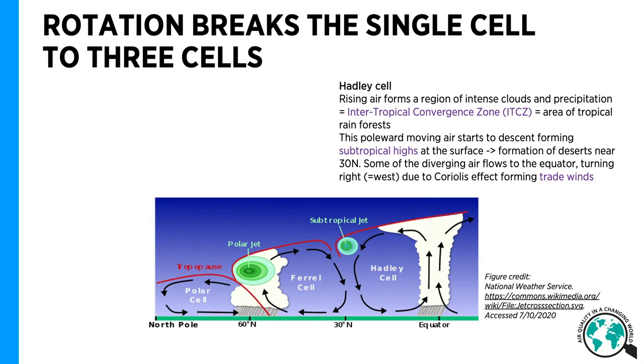In reality, the rotation breaks the single cell to three cells. Rising air at the equator forms intense clouds and precipitation, the so-called intertropical convergence zone. This intertropical convergence zone is not stationary but moves northwards and southwards according to the season.